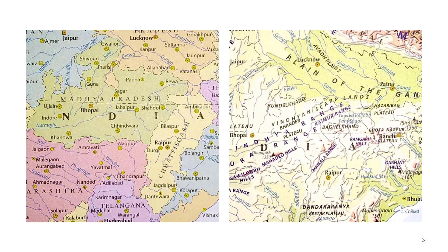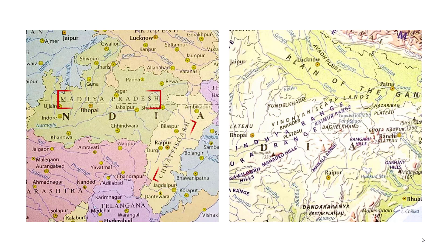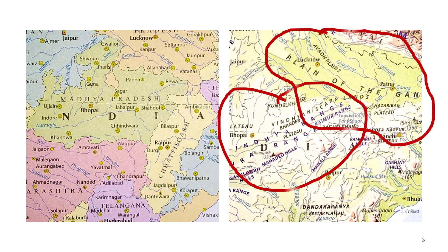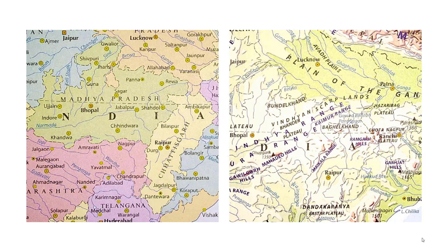Then we come to Central India. Central India is just two states — Madhya Pradesh and Chhattisgarh — often called the heart of India. The Indo-Gangetic Plain and the Malwa Plateau are its natural features. They are highly rich in minerals.